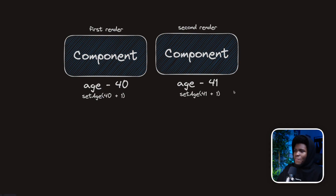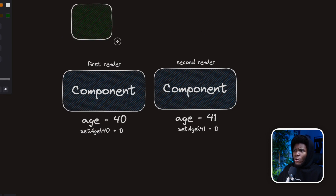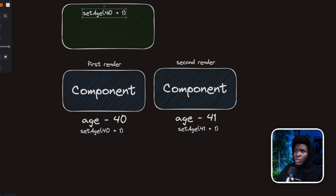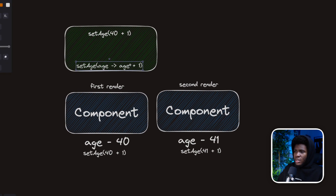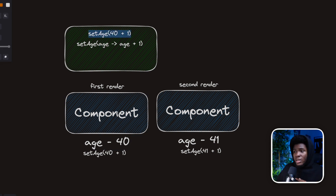Let's go back to our diagram. When you say setAge(40 + 1), the new age state is going to be used in the second render. React also keeps a queue for what is going to happen for the second render. When you say setAge(41), that goes into the queue — you're telling React that for the next render, you want to update your age state to 41. But when you have an updater function, it's also added to the queue. The difference is that the age argument in the updater function refers to the updated pending state for the next render — not the first render value of 40 — so it has access to 41.